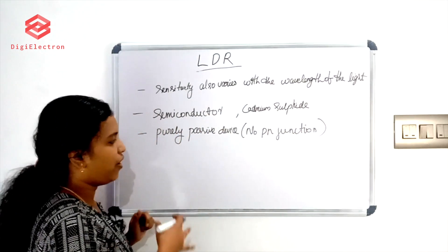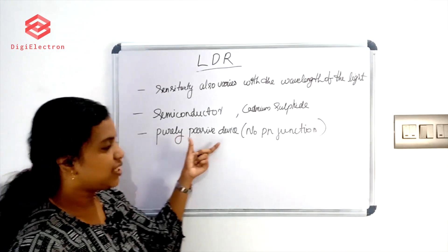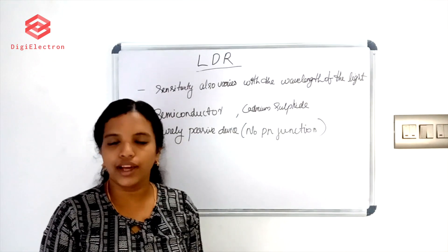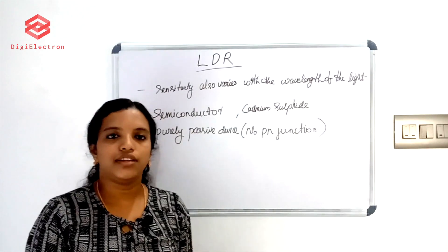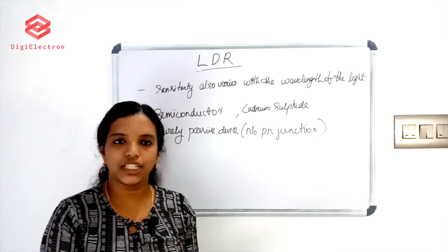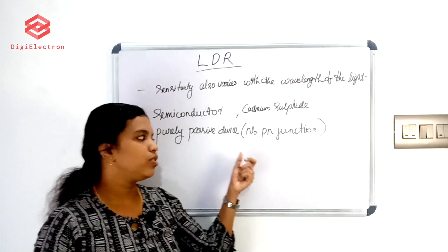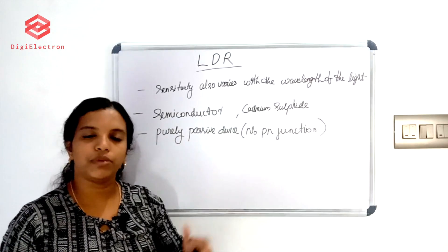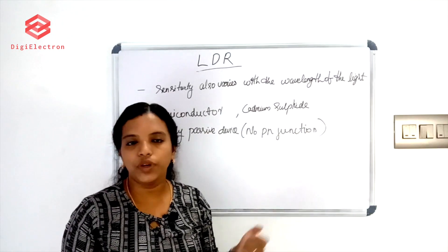Photoconductors are different from devices with PN junctions. LDR is a purely passive device — it has no PN junction.